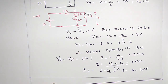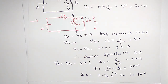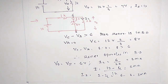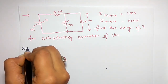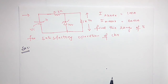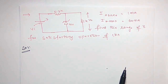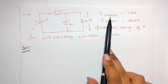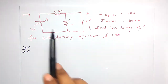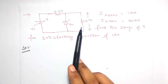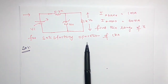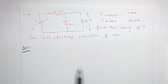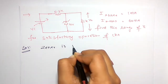Just by interchanging the position of resistors, now the Zener operates in the breakdown region. One more problem: the input voltage is variable. You have to find the range of input voltage for satisfactory operation of the circuit. IZ minimum and IZ maximum are given. RS is 0.3 kilo ohms, RL is 1 kilo ohm, and Vz is 10 volts. Satisfactory operation means we assume the Zener is operating in breakdown region.